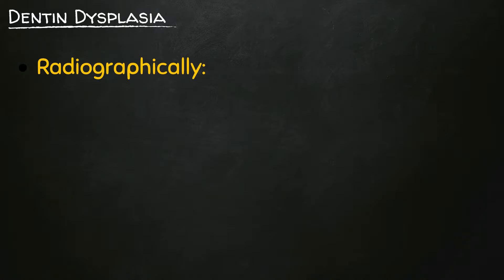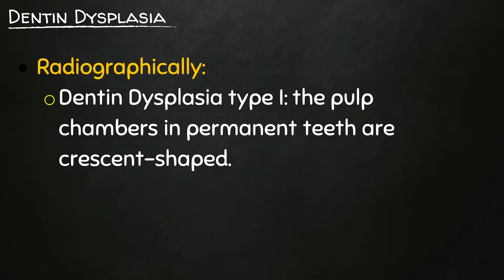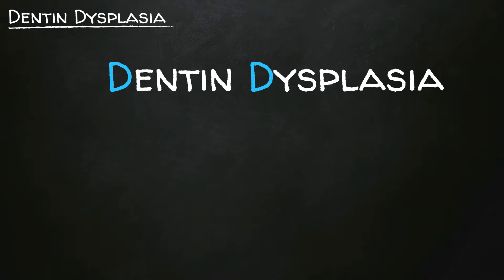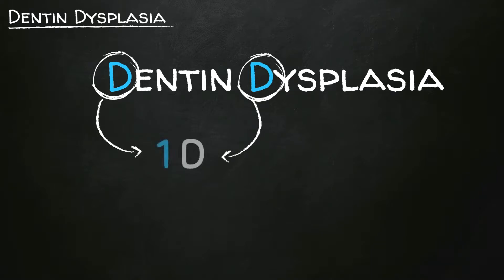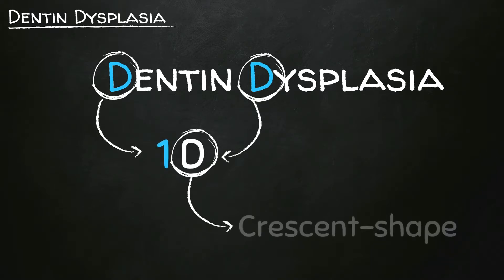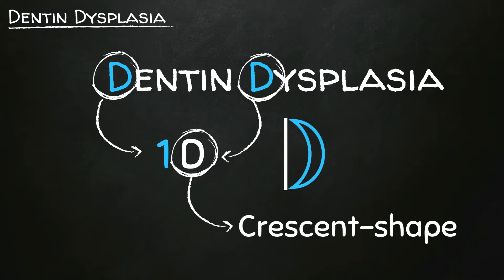Now let's look at the radiographic appearance of Denton dysplasia. In Denton dysplasia type 1, the pulp chambers in permanent teeth are crescent shaped. Look at the letter D — it reminds you of a crescent. Here is an illustration: here is the stick and here is the crescent. So in Denton dysplasia type 1, we look at the first letter D, and the D is crescent shaped.